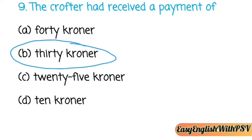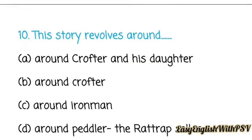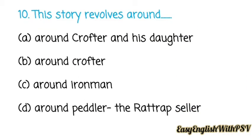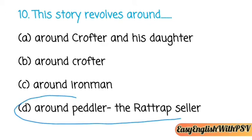Question number ten: Who is at the center of this story — the crofter and his daughter, the crofter, the iron man, or the peddler, the rat trap seller? The correct answer is: the peddler, the rat trap seller.